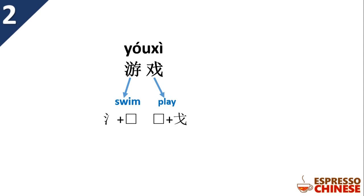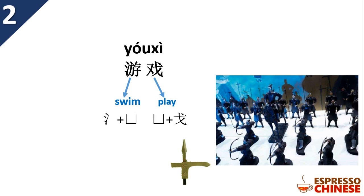戏 means 'to play'. Look at the right side — it is a kind of weapon from ancient times. You may wonder what a weapon has to do with the meaning 'to play'. In old days, many characters had something to do with wars. In ancient times, soldiers would perform a kind of show with their weapons for their general or king — they would play with their weapons. That's how this character came about. Together, 游戏 means 'game'.